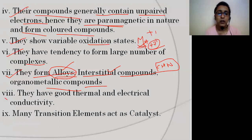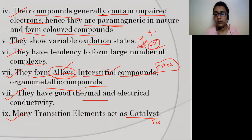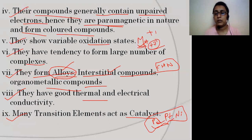They can also form organometallic compounds. They have good thermal and electrical conductivity. Many transition elements act as catalysts — for example, palladium, platinum, and nickel are all used as catalysts in organic chemistry reactions.